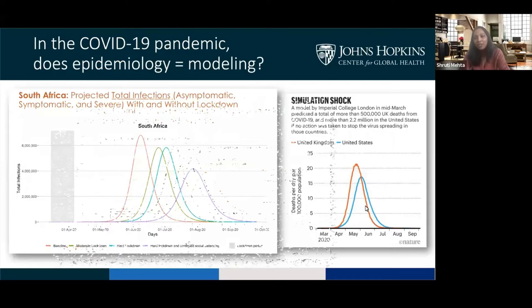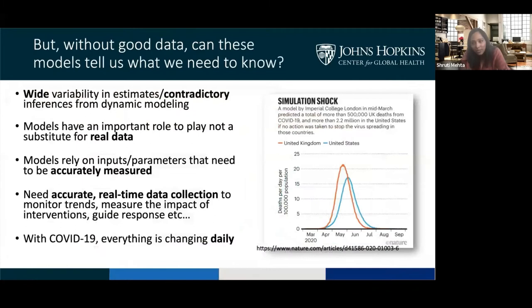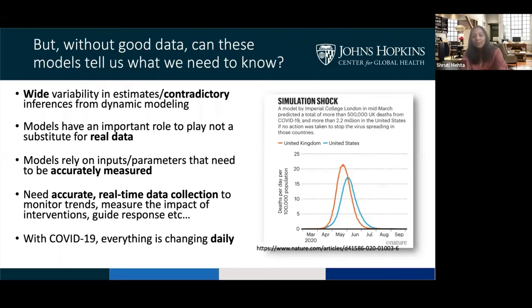It was the Imperial College model that nearly led to a lot of the shutdowns and preventive strategies put in place. You can find a model for pretty much any country at this point. I don't want to discount the importance of these models — they've been critical for making decisions about lockdown, social distancing, and other preventive strategies. But models alone aren't going to be enough. All of these models require inputs, and they're only as good as the quality of those inputs. We need accurate, real-time data collection to monitor trends in cases and outcomes, measure the impact of interventions, and guide the response.